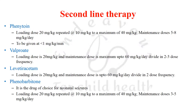Phenytoin is given as a loading dose of 20 mg/kg, repeated at 10 mg/kg to a maximum of 40 mg/kg, with maintenance of 5–8 mg/kg/day. It has a narrow therapeutic index and must not be administered at more than 1 mg/kg/minute, as it has the potential to cause arrhythmias, seizures, and sudden cardiac death.